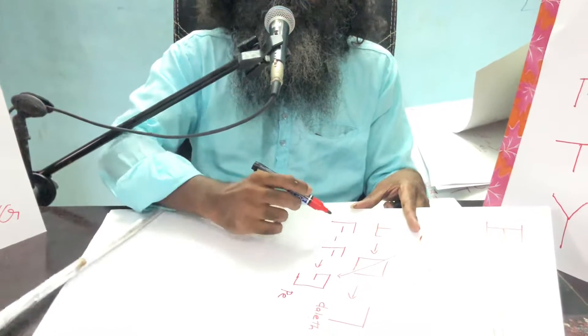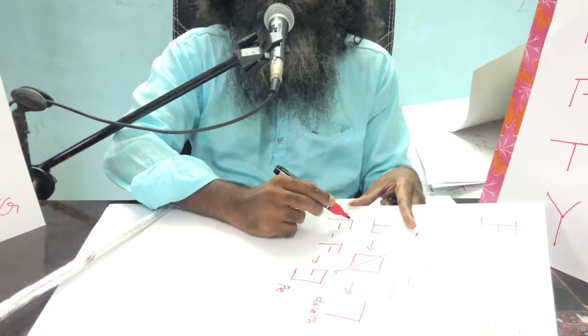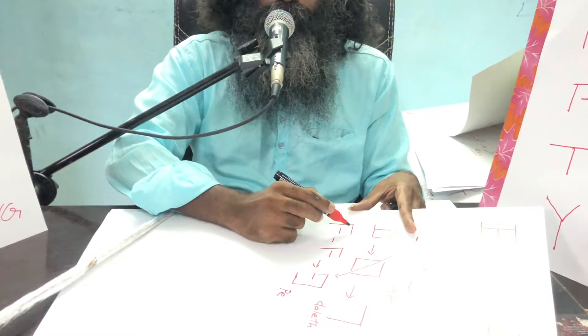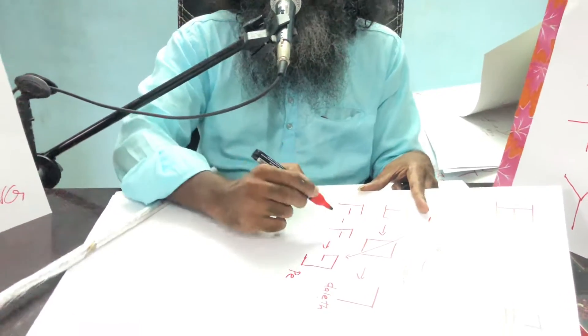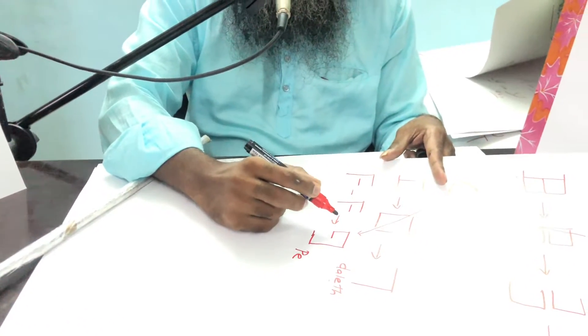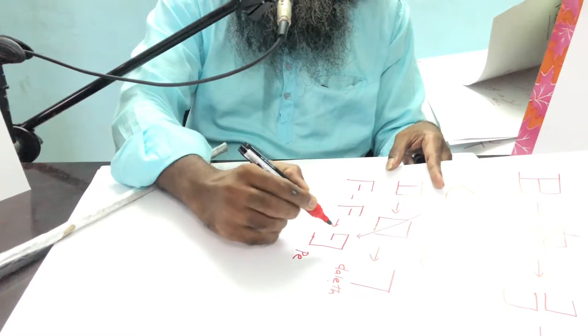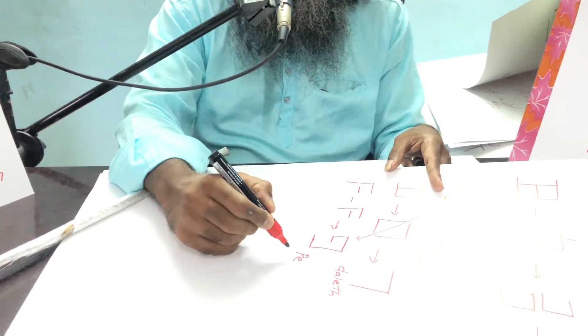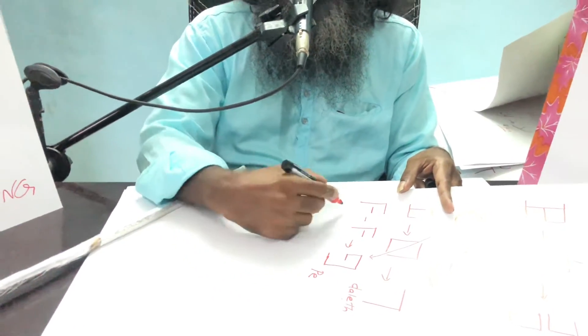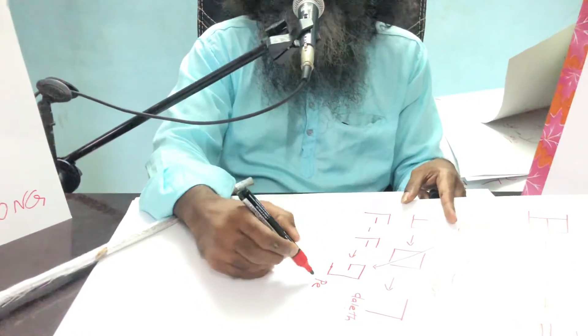From the English letter F, which is written from the left side, I write the same letter from the right side, and I make small changes to get the Hebrew letter Pe. Both F and Pe have the same sound Pa. The English letter is written from the right side.